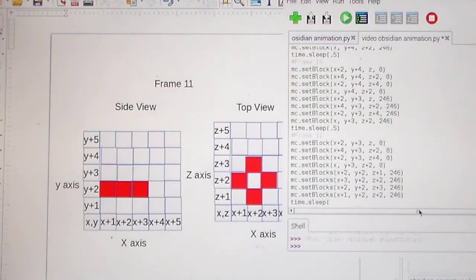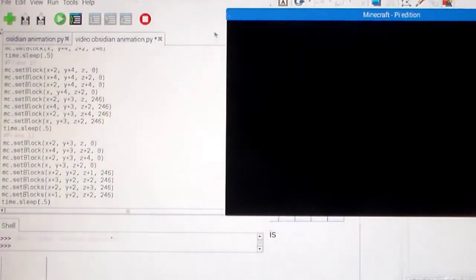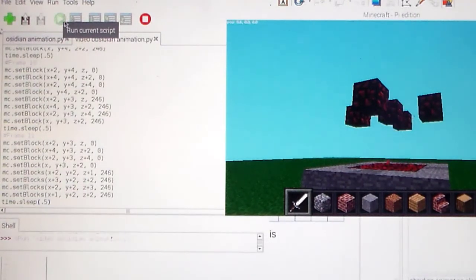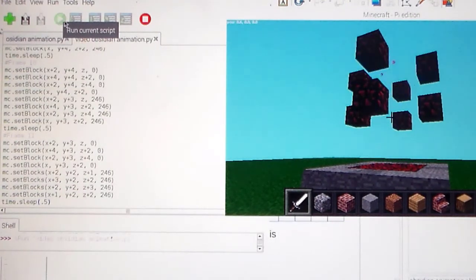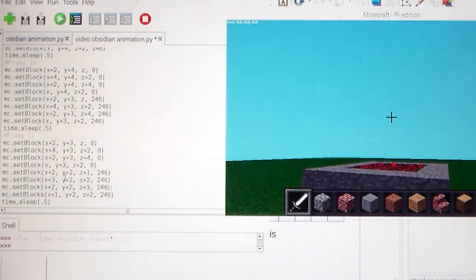Alright, so if I ran this, it will look like this. It's going to go up. And we're expecting it to go down and in, but it doesn't go in. That's because I have set blocks instead of set block. So I'm just going to go in and modify that. That's just a little mistake of mine.